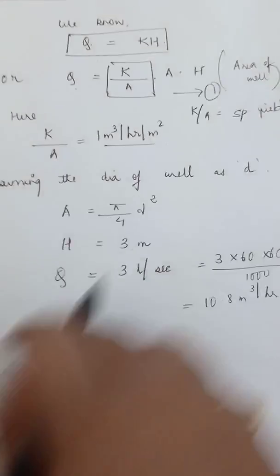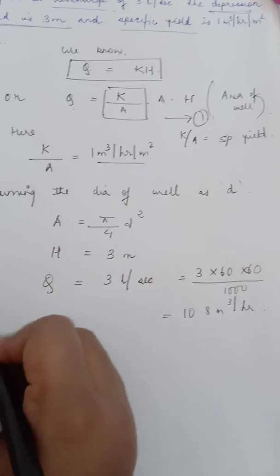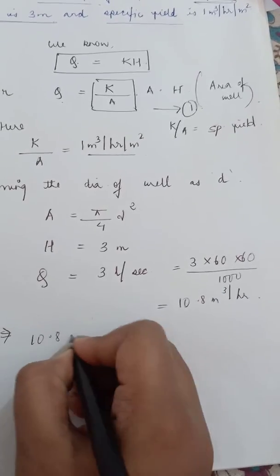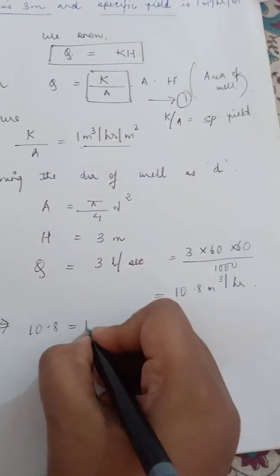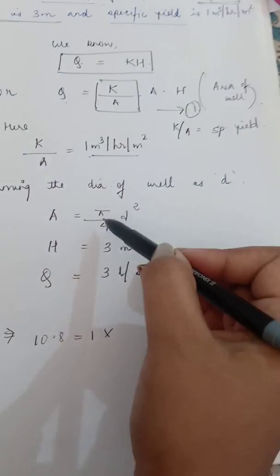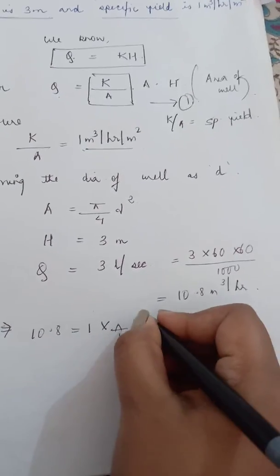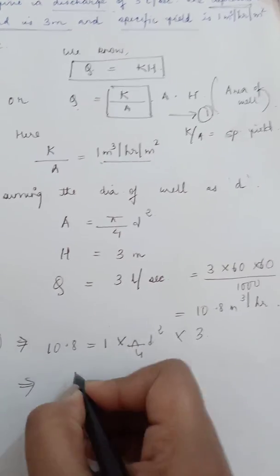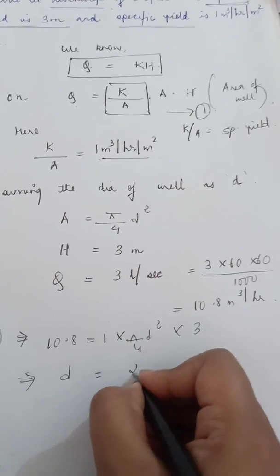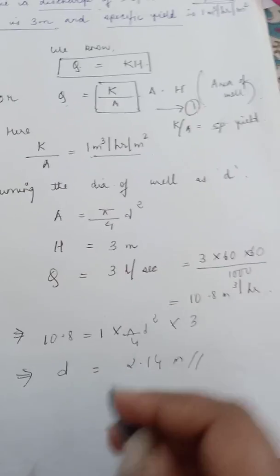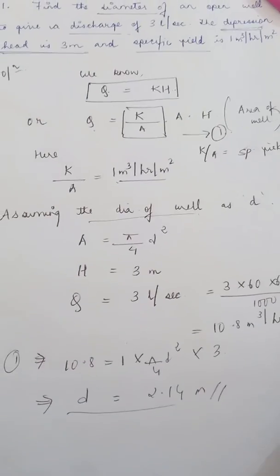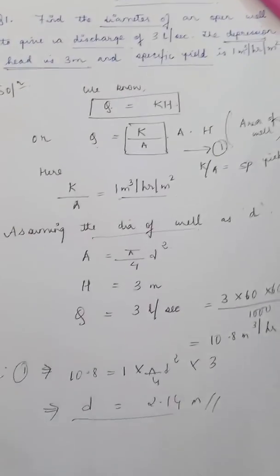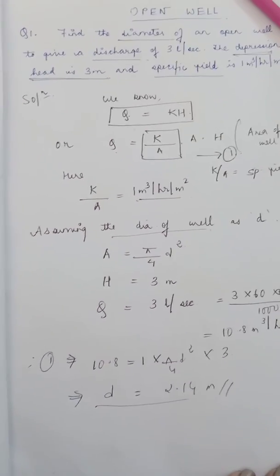From equation 1, Q equals 10.8, k/A equals 1, area equals pi by 4 times d squared, and h equals 3. After solving this equation we can find the value of d. Therefore, the diameter of the well is 2.14 meters. This sum is related to the constant head test and is very simple.